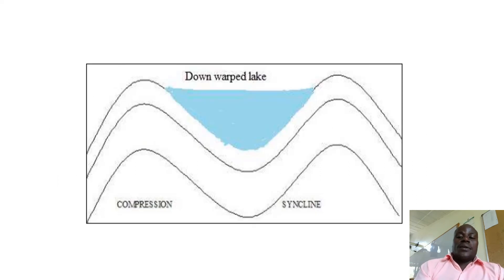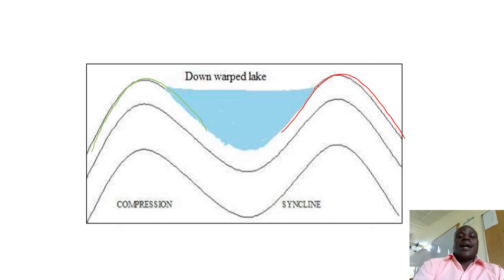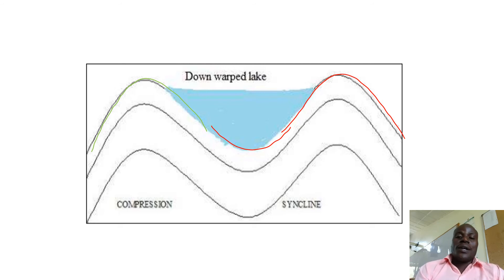If you check on this diagram, this part on the left was upwarped, the other part on the right was also upwarped, and the central part was downwarped. When this central region was filled with water, it formed a downwarped REC.